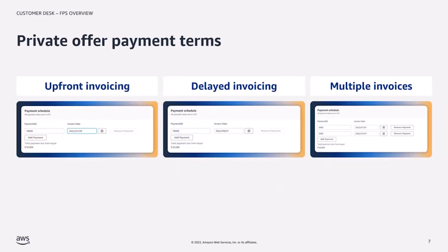In the payment schedule section, the seller will be able to set how they would like the buyer to be invoiced by AWS. If the buyer needs to be invoiced upfront upon acceptance, the seller simply needs to enter the dollar amount and set the invoice date to the date they are creating the private offer.